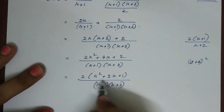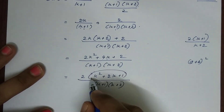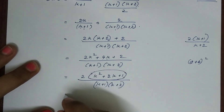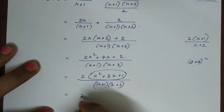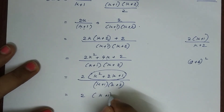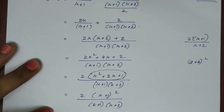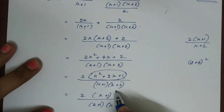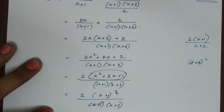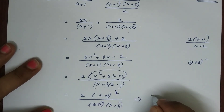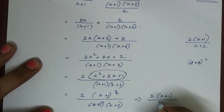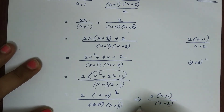The numerator factors as 2(k+1)(k+1), and dividing by the denominator (k+1)(k+2), we cancel (k+1) to get 2(k+1) divided by (k+2). This is exactly the RHS of P(k+1), so P(k+1) is true whenever P(k) is true. By mathematical induction, the statement is proved for all natural numbers n.